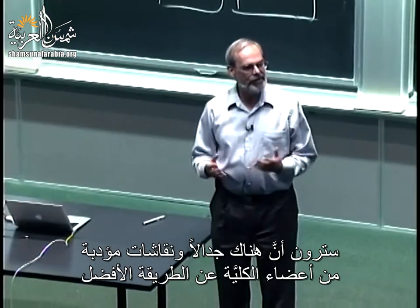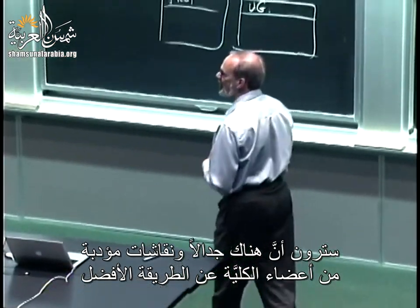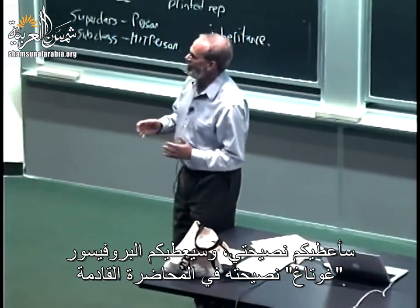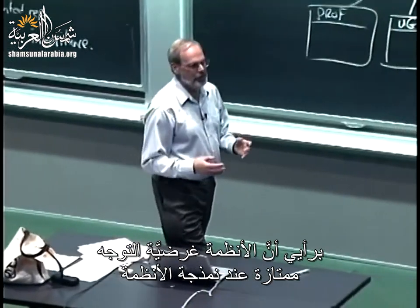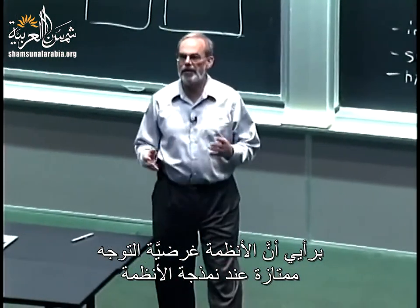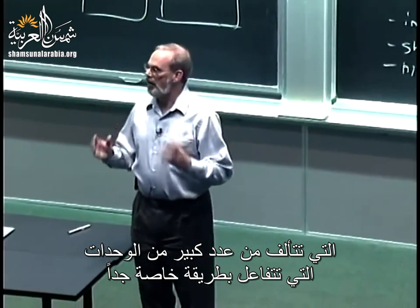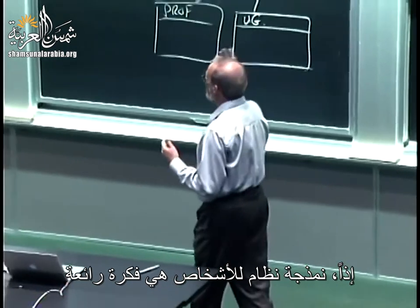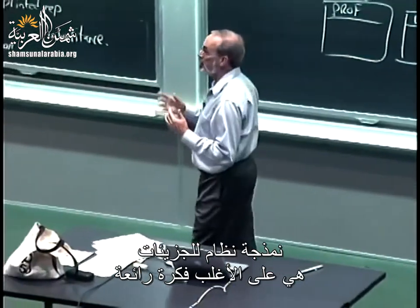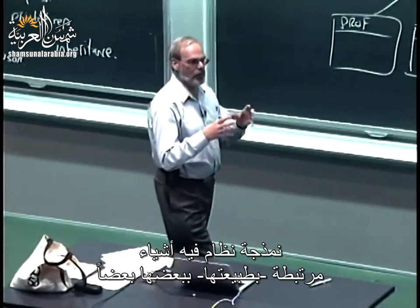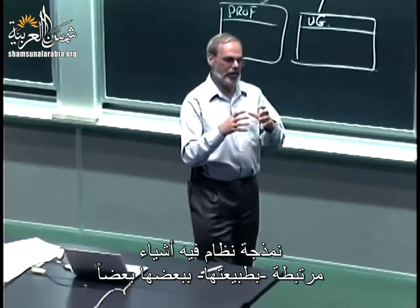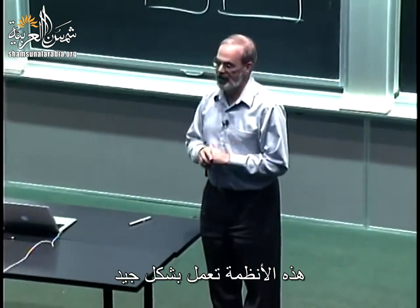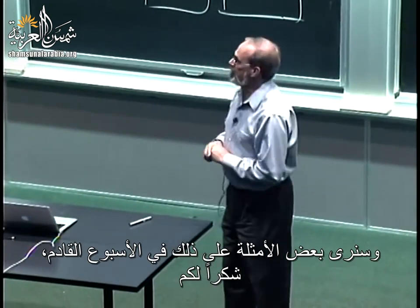Hopefully you've seen between these two lectures — and we're going to come back to this in subsequent lectures — a different way of structuring a big computational system. Object-oriented systems are great when you're trying to model systems that consist of a large number of units that interact in very specific ways: modeling a system of people, modeling molecules, modeling a system where it is natural to associate things together and where the number of interactions is very controlled. We'll see some examples of that next week.